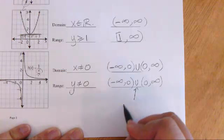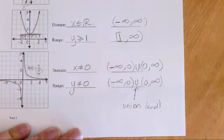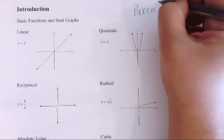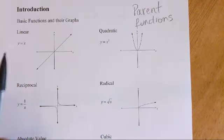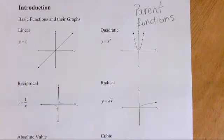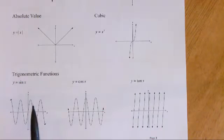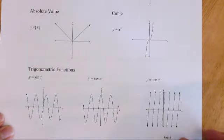That union symbol, in layman's terms, means 'and' — combining both parts. The next thing we're going to look at is basic functions and their graphs, which we'll call parent functions, because everything kind of starts from here. These include the linear, quadratic, reciprocal, radical, absolute value, cubic, and trig functions — sine, cosine, and tangent. You need to be familiar with these to have an easier time with the upcoming questions.